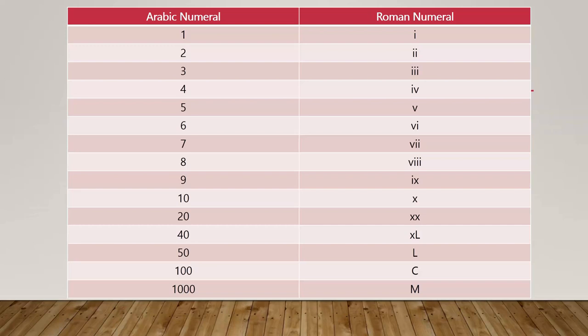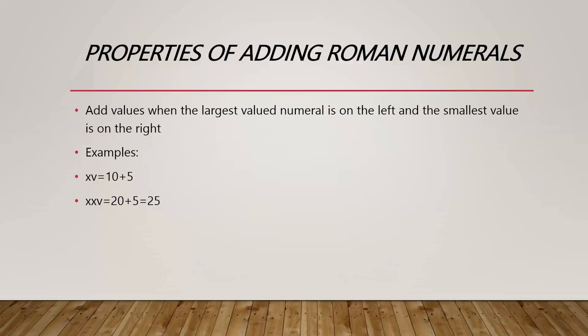When the largest value numeral is on the left and the smallest value is on the right, we add them. For example, XV: we notice that X is 10 and V is 5. Since 10 is larger than 5, we add 10 and 5 to get 15.